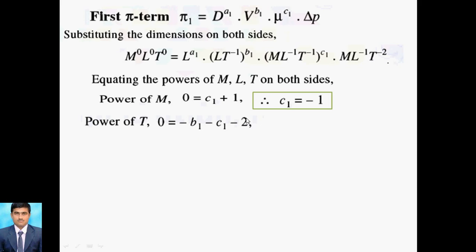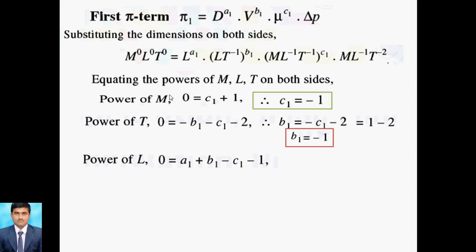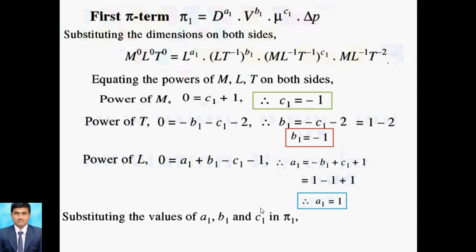For π1 with Δp: substituting dimensions M⁰L⁰T⁰ = L^a1 · (LT⁻¹)^b1 · (ML⁻¹T⁻¹)^c1 · (ML⁻¹T⁻²). Power of M: 0 = c1 + 1, so c1 = −1. Power of T: 0 = −b1 − c1 − 2, giving b1 = −1 (using c1 = −1). Power of L: 0 = a1 + b1 − c1 − 1; substituting gives a1 = 1. Therefore π1 = d · v⁻¹ · μ⁻¹ · Δp = dΔp / (μv).